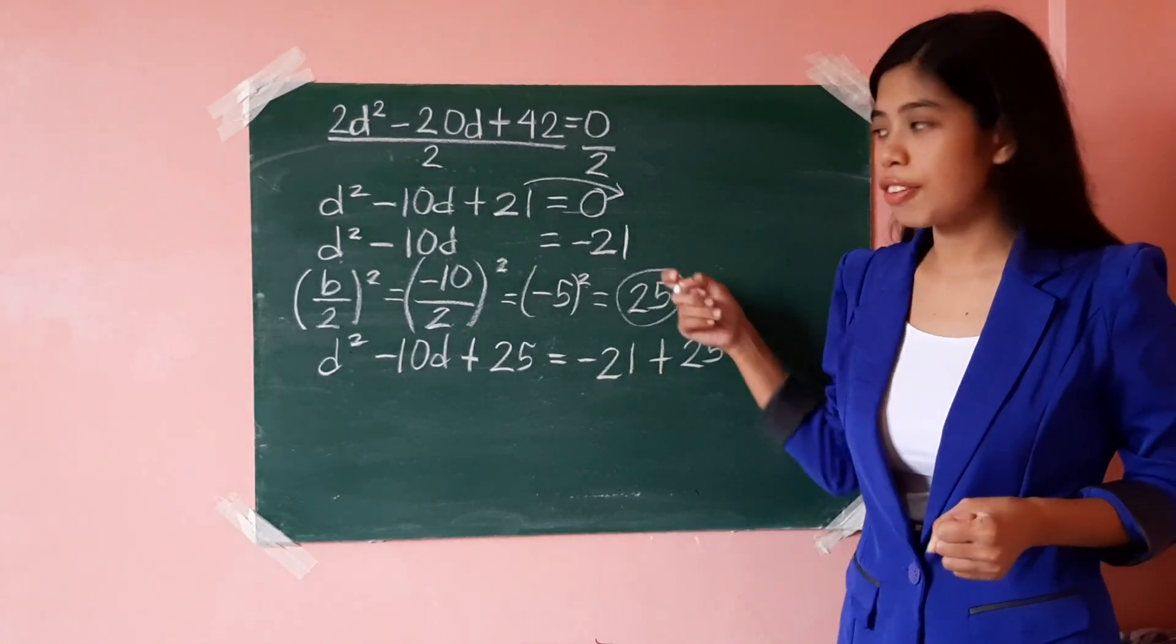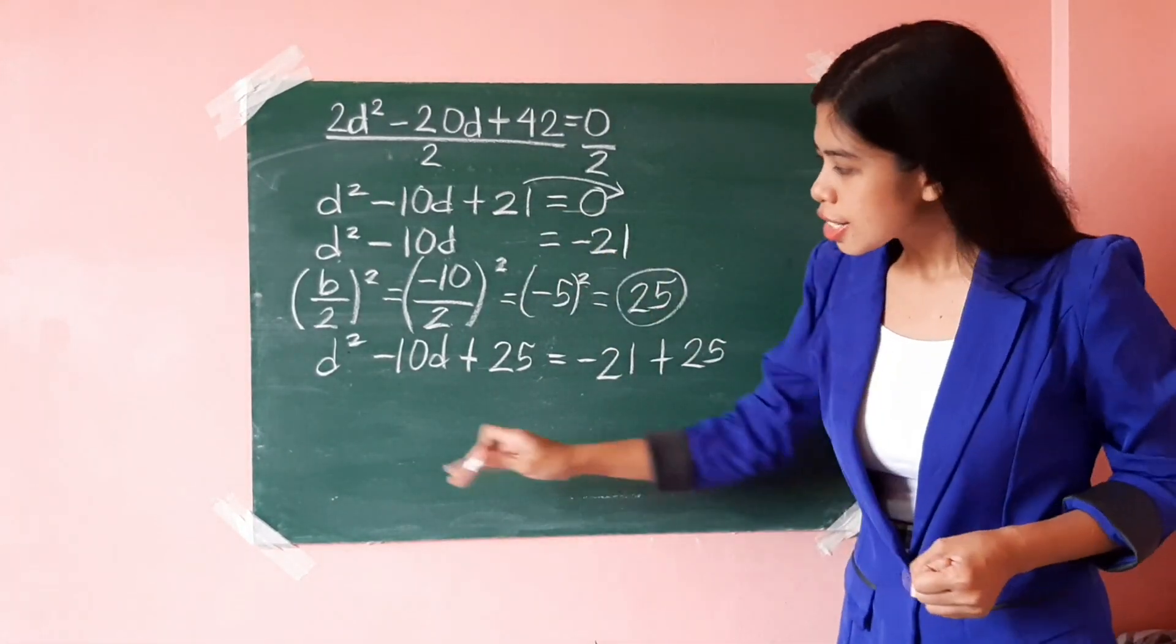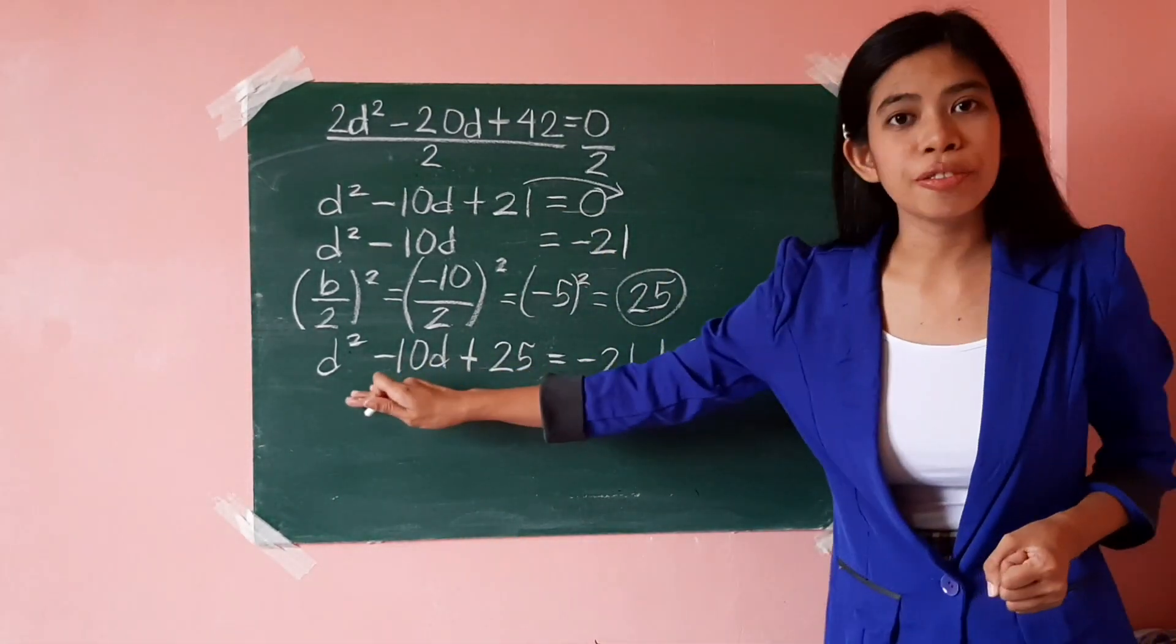Again, we add 25 on both sides of the equation. So, this is now a perfect square trinomial.